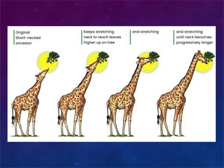Two classic examples of Lamarckian evolution are the giraffe and the crab. According to Lamarck, giraffes started with short necks, and as they stretched to reach higher food every day, their necks got progressively longer. Similarly, crabs originally had uniform legs, but by using the front claw to defend themselves — like lifting weights — that claw got bigger and bigger. So because they were using these parts extensively, that's where the evolutionary change occurred.